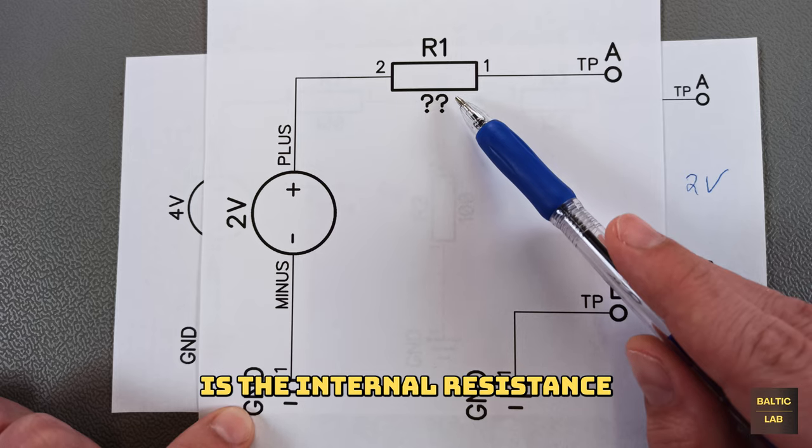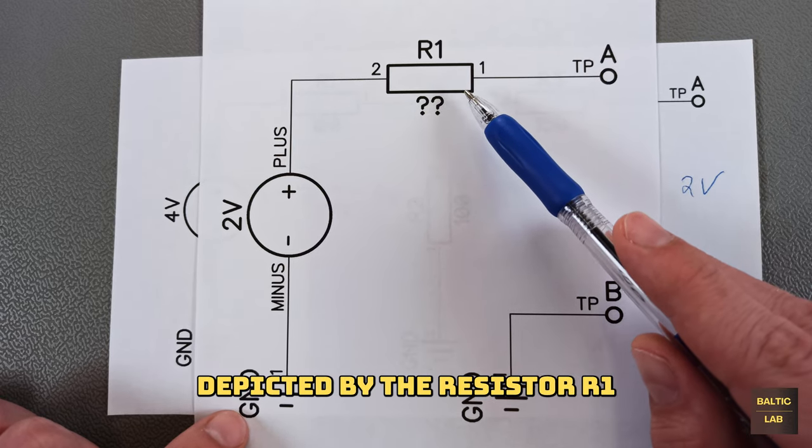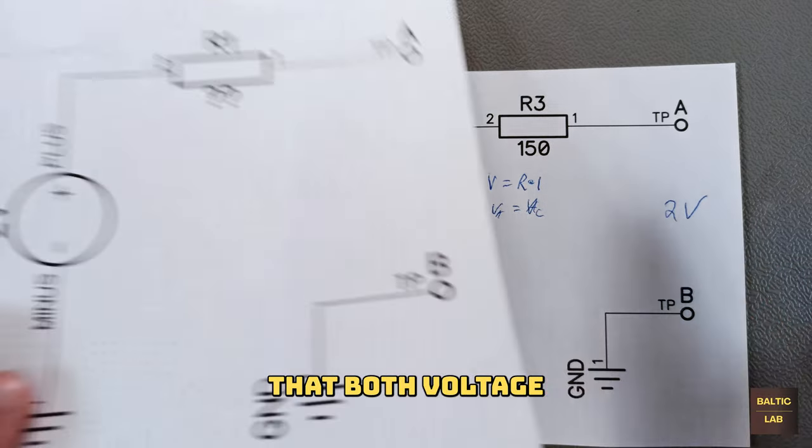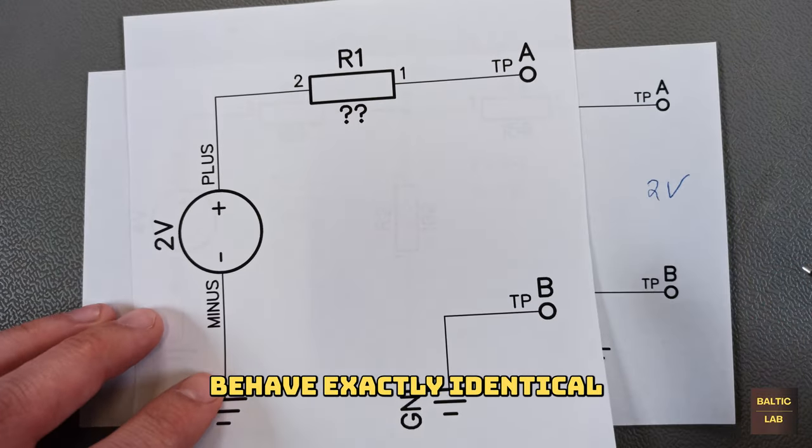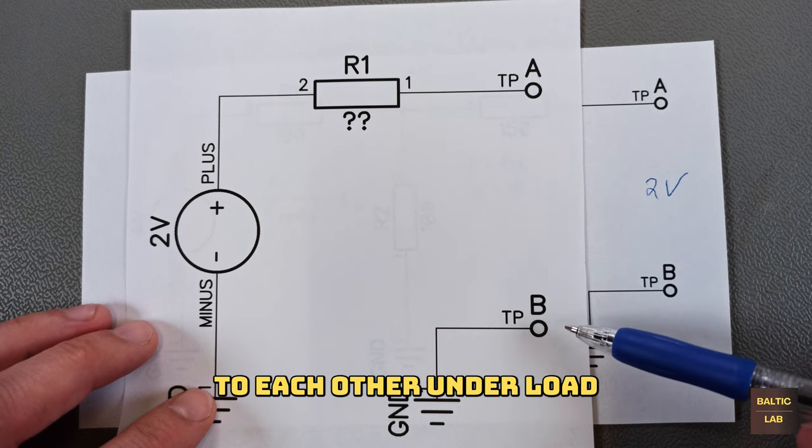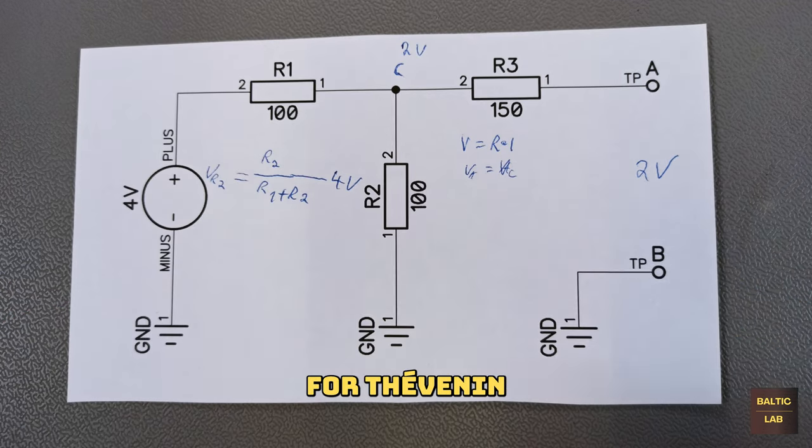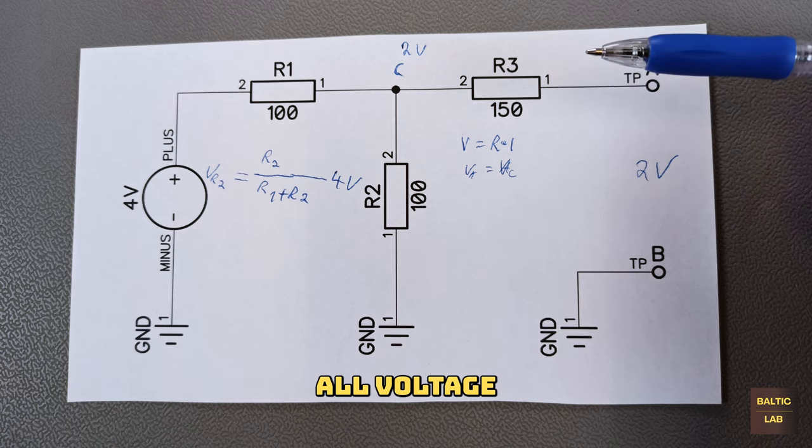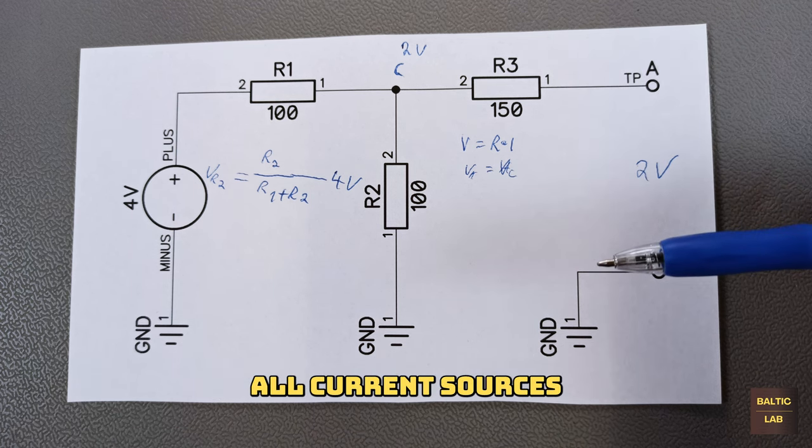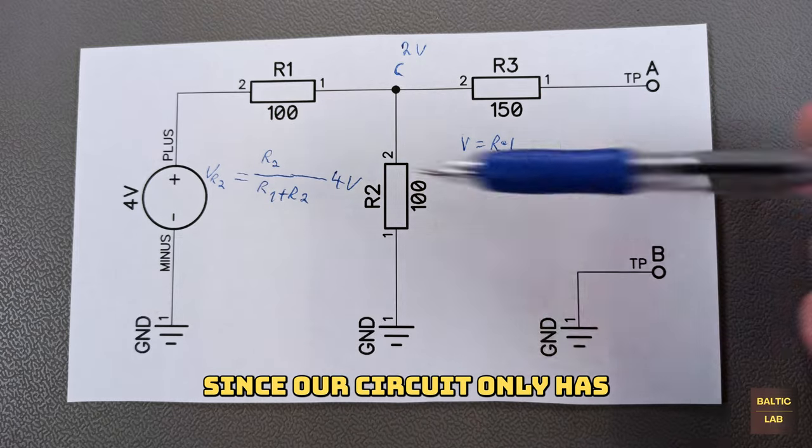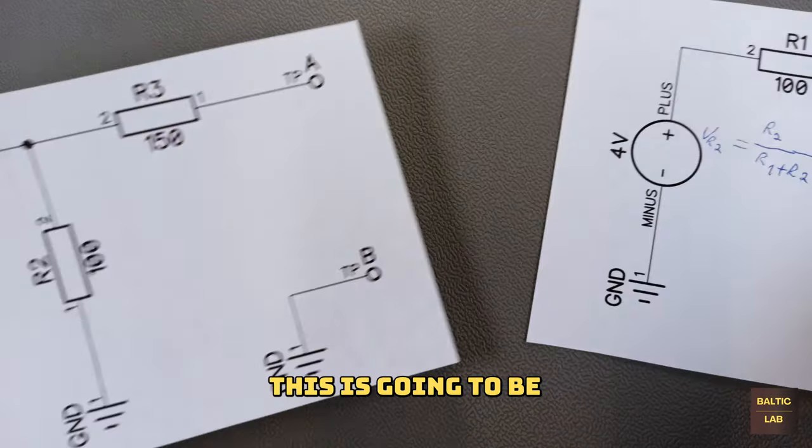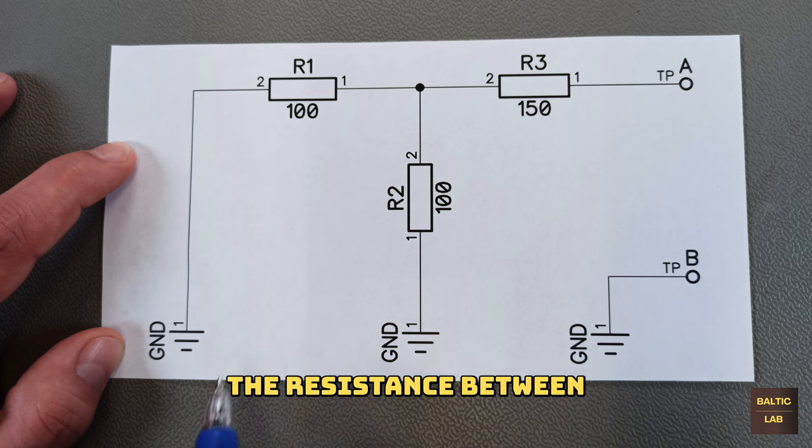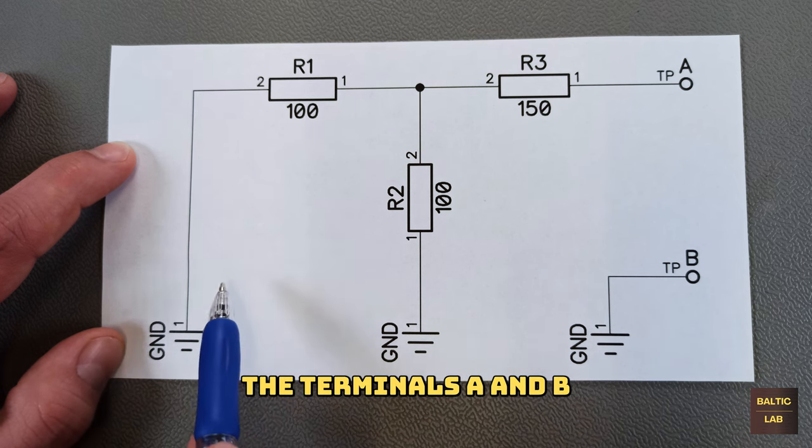The second puzzle piece is the internal resistance depicted by the resistor R1. The resistance needs to be chosen in a way that both voltage sources behave exactly identical to each other under load conditions. For Thevenin equivalent voltage sources the rule is to short out all voltage sources and open up all current sources. Since our circuit only has one voltage source this is going to be quite simple. With the voltage source shorted out the resistance between the terminals A and B is determined.